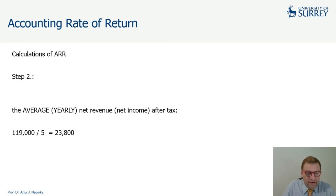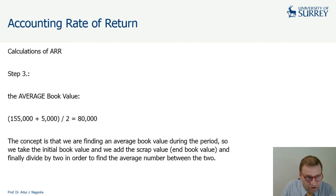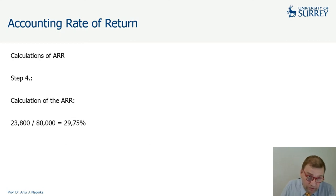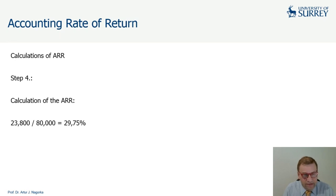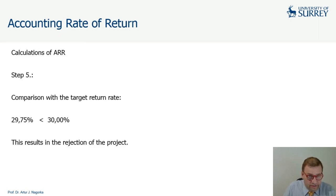Step two: average yearly net income after tax — 119,000 divided by five years equals 23,800. Step three: instead of using the initial investment, we use the average book value, which is 155,000 plus 5,000 at the end divided by two, giving an average book value of 80,000. We then divide the average annual net income of 23,800 by 80,000, which gives us 29.75 percent. This is lower than the target rate of 30 percent, so the result is rejection of the project.